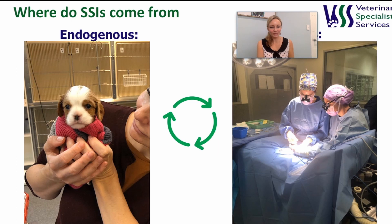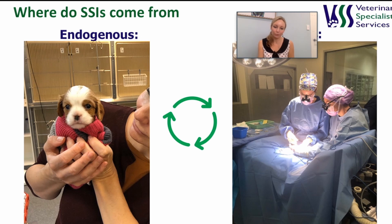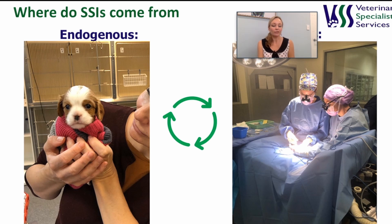So where do surgical site infections come from? Firstly, they can come from the patient — these are called endogenous infections — and which bug causes the infection depends on the surgical procedure. For example, if you're performing a lumpectomy you may be more concerned about skin contaminants such as staphs, streps, and gram-negative enteric bacteria. For exploratory celiotomies and foreign body removals, you are mainly thinking about gram-negative bacilli, and I'll show you a handy table for memory in a moment.